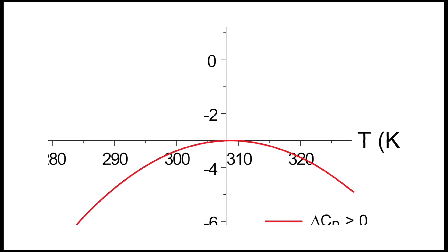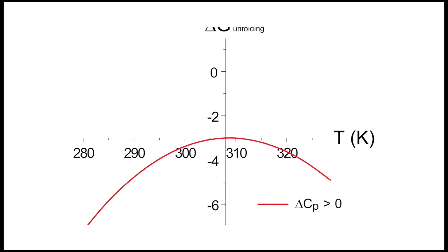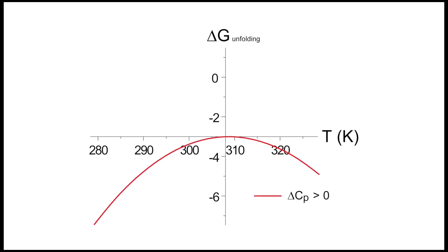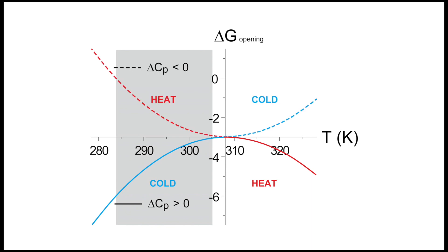Proteins undergo heat- and cold-induced denaturation due to solvent exposure of hydrophobic residues in the unfolded state of the protein. It has been suggested that similar principles may work for temperature-sensing ion channels. In that case, the free energy of channel opening versus temperature plot will be convex when the delta Cp associated with channel opening is positive, whereas when delta Cp is negative, the delta G opening versus T plot will be concave.